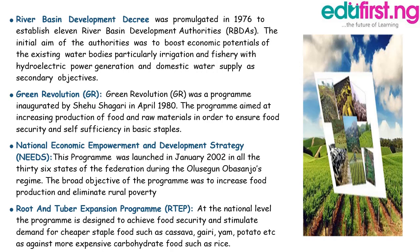Finally, we have the Root and Tuber Expansion Program. At the national level, the program was designed to achieve food security and stimulate demand for cheaper staple foods such as cassava, garri, yam, and potato, as against more expensive carbohydrate foods like rice.